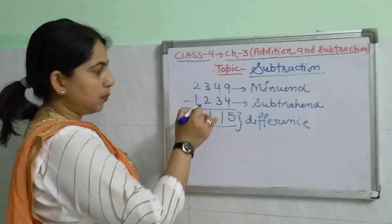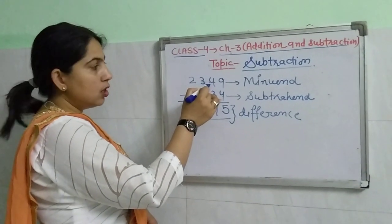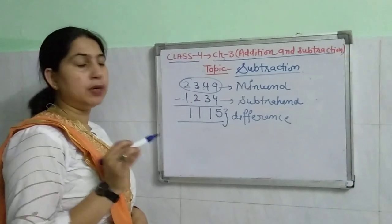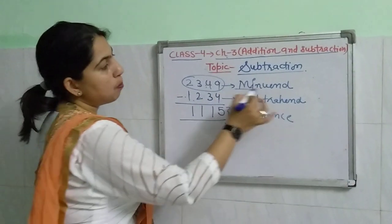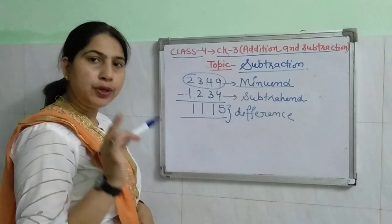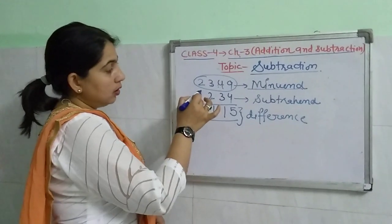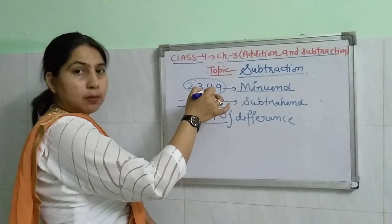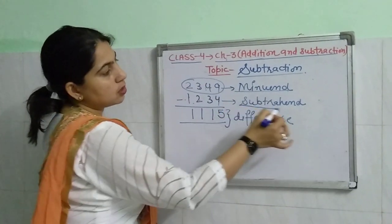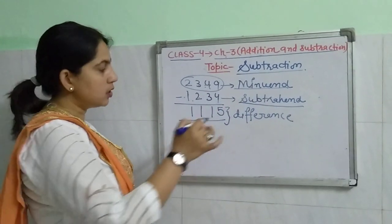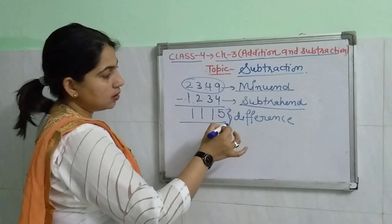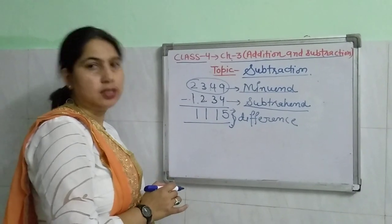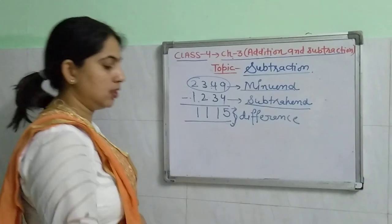So to recap: the number from which we subtract is called the minuend, the number which we subtract is called the subtrahend, and the answer we get is called the difference.